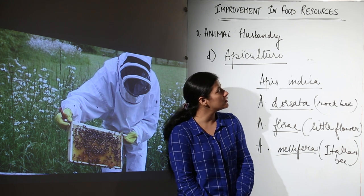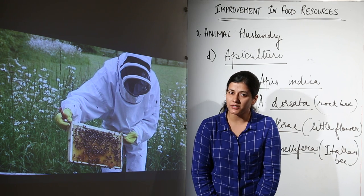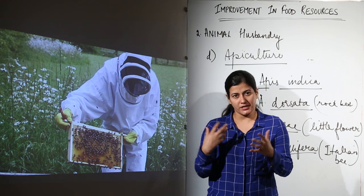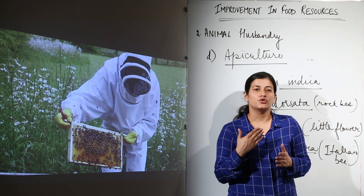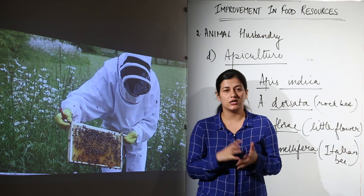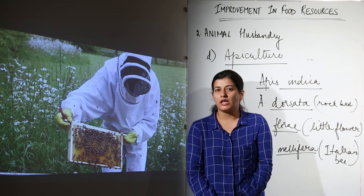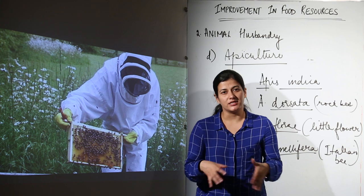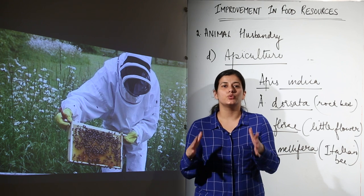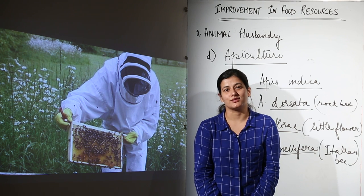Honey is a good antiseptic and a source of many medicines in Ayurvedic medicine. To summarize animal husbandry: cattle farming is done for obtaining food from cattle; poultry farming is for obtaining eggs and broilers from fowl; fisheries covers aquatic food resources; and lastly, apiculture covers honey bee rearing. This concludes the topic of improvement in food resources.